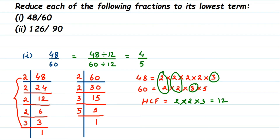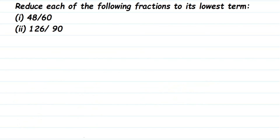That was the long method using the Highest Common Factor. We got 4/5, which cannot be reduced further — it is in its lowest form. Now for the next question, I'm going to use a different method: the cancellation method. The number is 126 by 90, and we cancel using a number that can divide both.